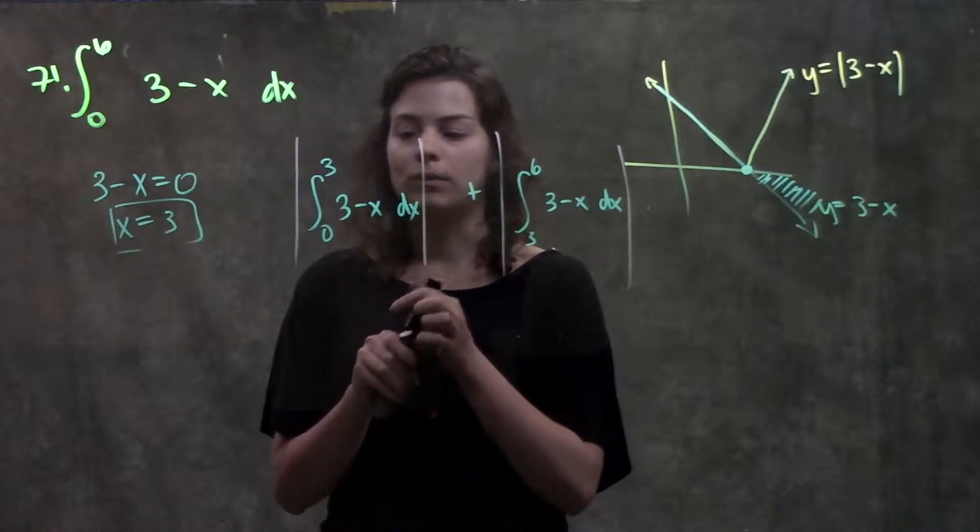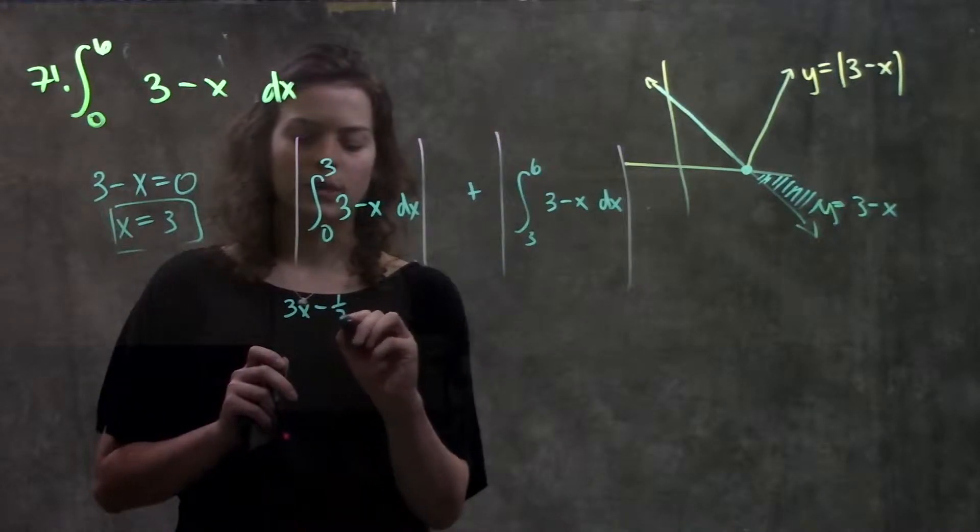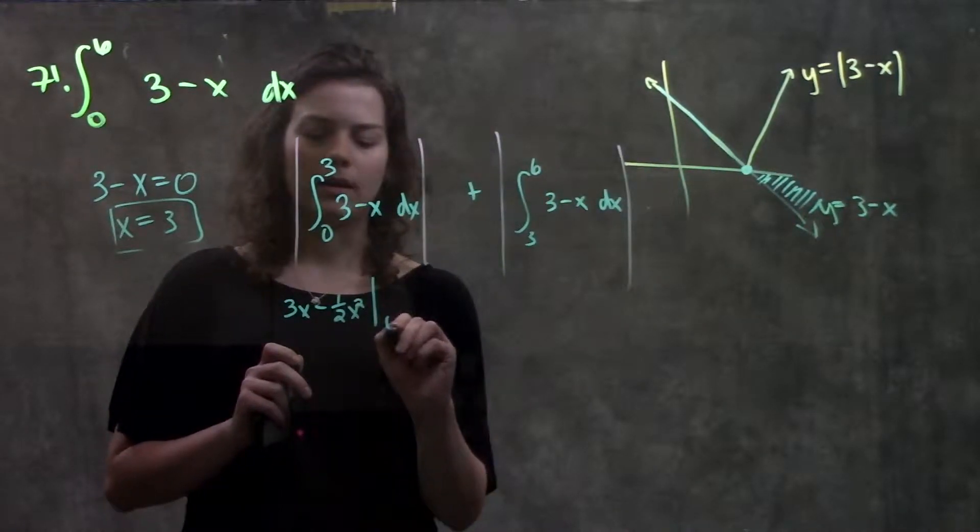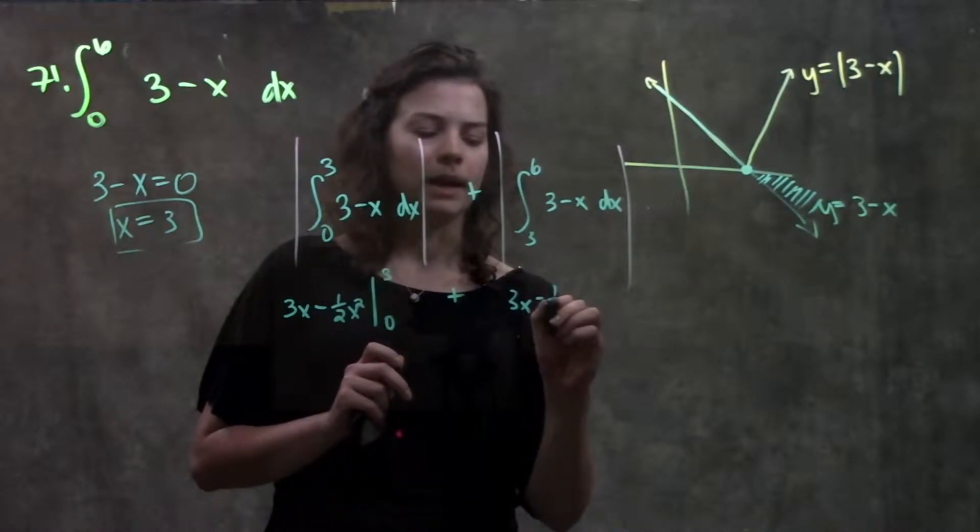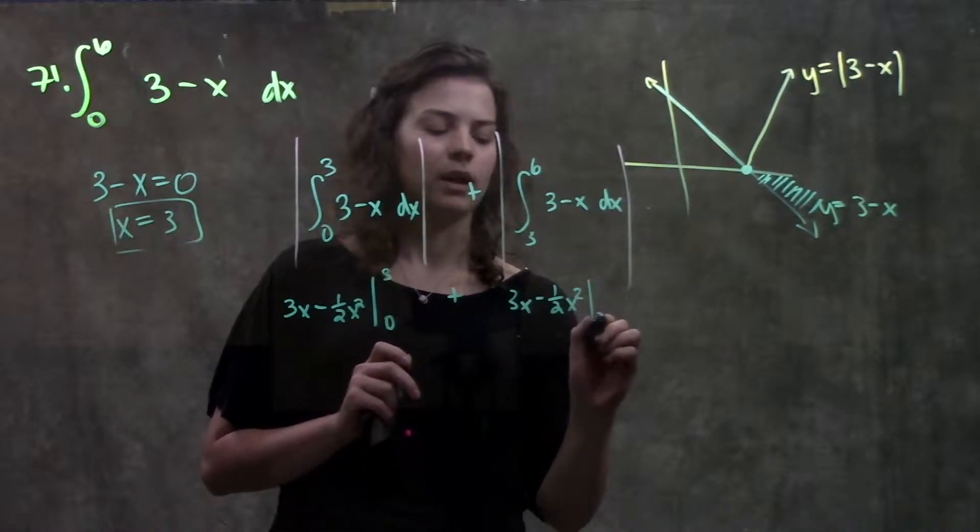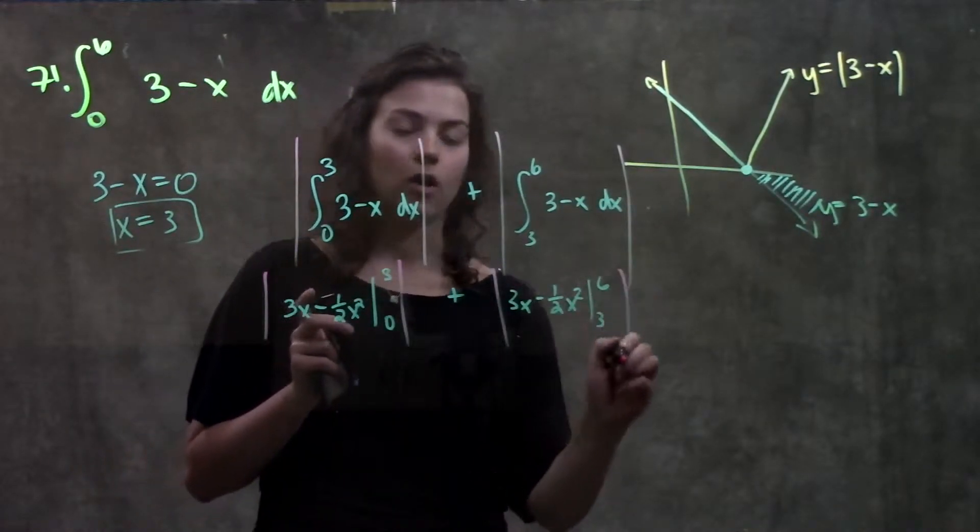So now I can just take the integral like normal. So the integral of three minus x becomes three x minus one half x squared from zero to three, plus, same thing over here, three x minus one half x squared from three to six. And remember, I still have my absolute values over both of these parts.